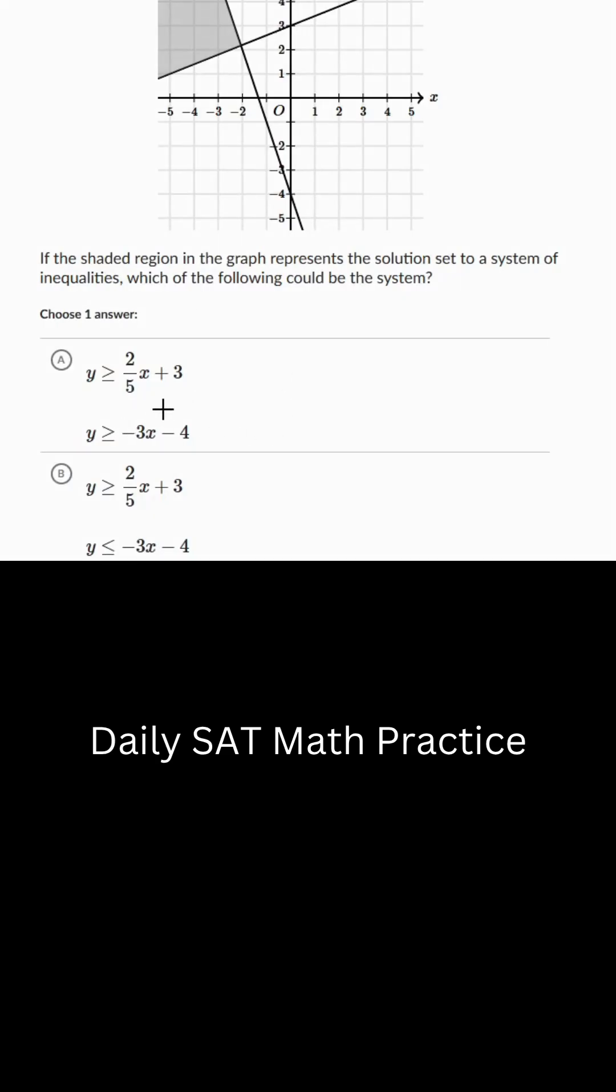Okay guys, here it gives us two equations for each of the questions or answers. We have this top equation, 2 fifths x plus 3, and the bottom one is negative 3x minus 4.